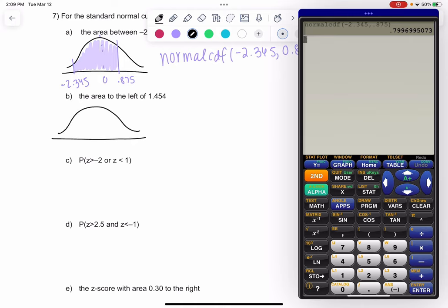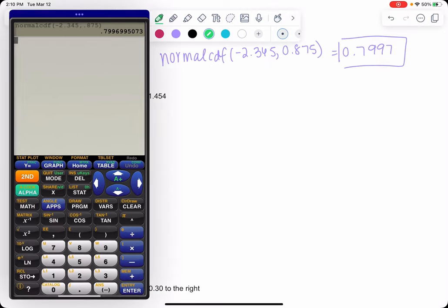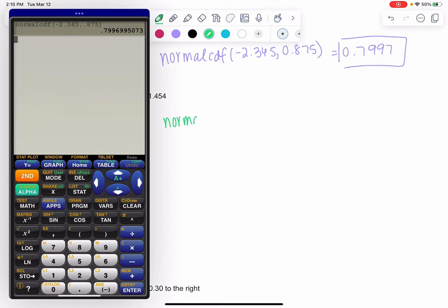The area to the left. So 0 is always in the middle, and 1.454 is to the right side of 0. Area to the left means everything to the left. We're going to get a pretty big area because it's most of the curve. Since we don't have a lower endpoint, we call that negative infinity, which is negative 10 to the 99 on the calculator.